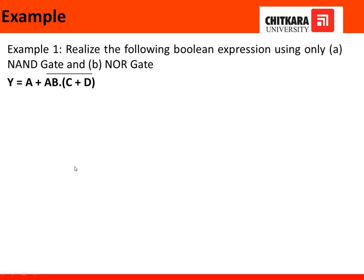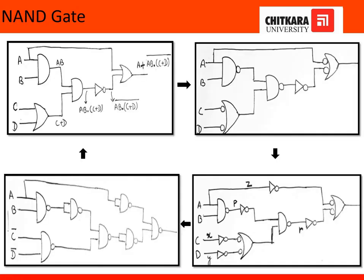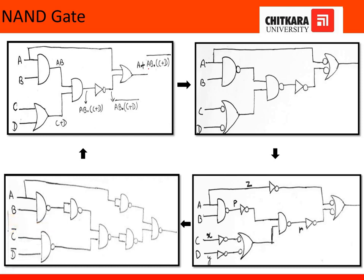Now let's take an example. Suppose we have to realize the expression A + AB · (C + D)' using NAND gates only. According to AOI logic, the diagram implements: AB is formed, then (C + D) is AND-ed with AB, then inverted. This output when provided to an OR gate gives us the full expression.